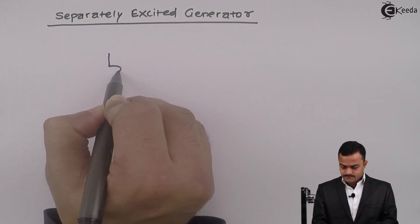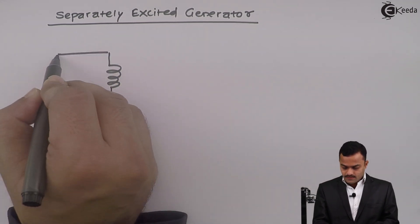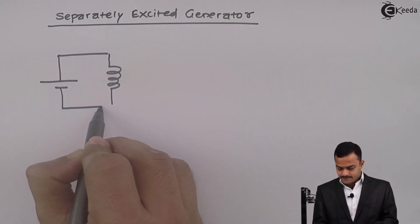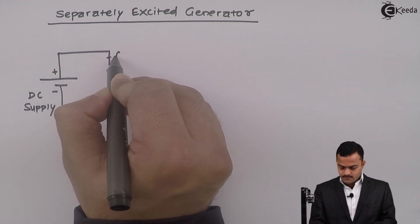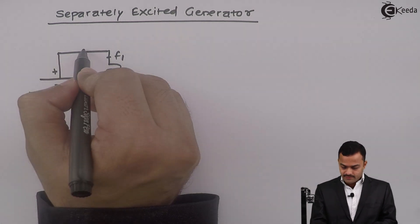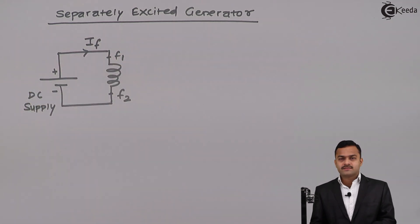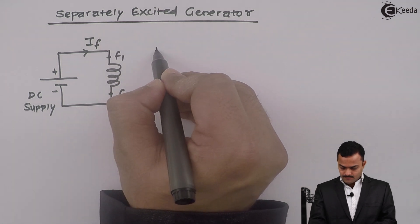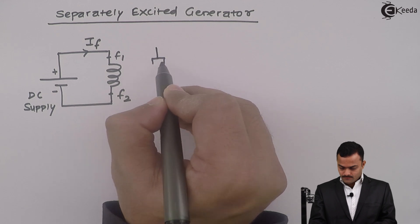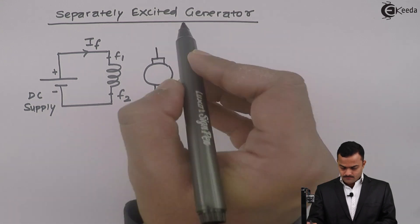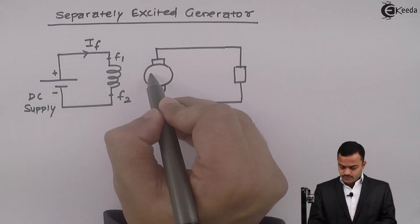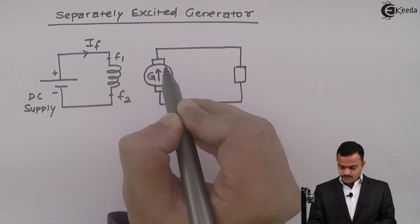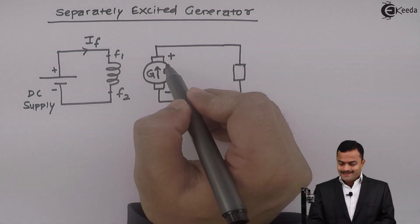We are having a field winding that is excited by a DC supply. These are the terminals F1 and F2. So obviously the current IF will flow. It will produce the flux required, so that cutting of this flux by the armature will induce EMF in the armature conductor. Armature is shown like this, and load is connected. This is how it is going to develop the EMF.